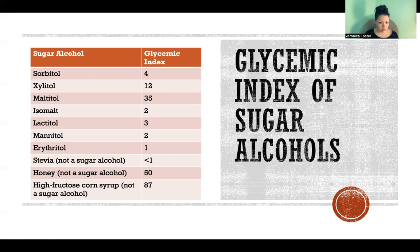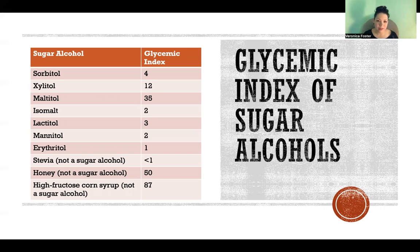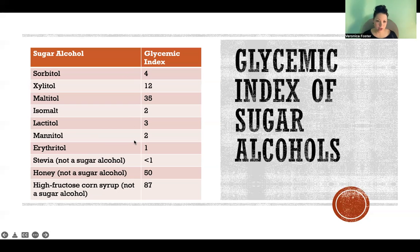Zero would be no effect at all. As you can see, Xylitol is at 12 and Maltitol is at 35. So if you are trying to stay in ketosis or manage your blood sugar, we can't necessarily group all sugar alcohols together and say they're all good or all bad. You can really try to stick with the ones that are one to four on the glycemic index, as those will have much less of an effect. Consider avoiding Xylitol or Maltitol, depending on how sensitive you are.